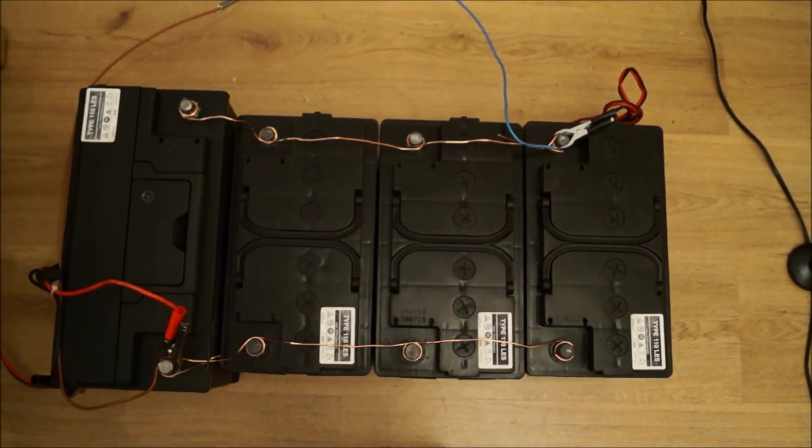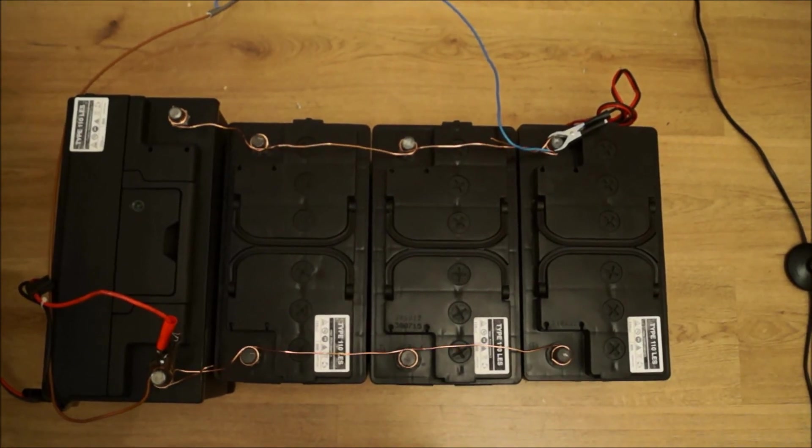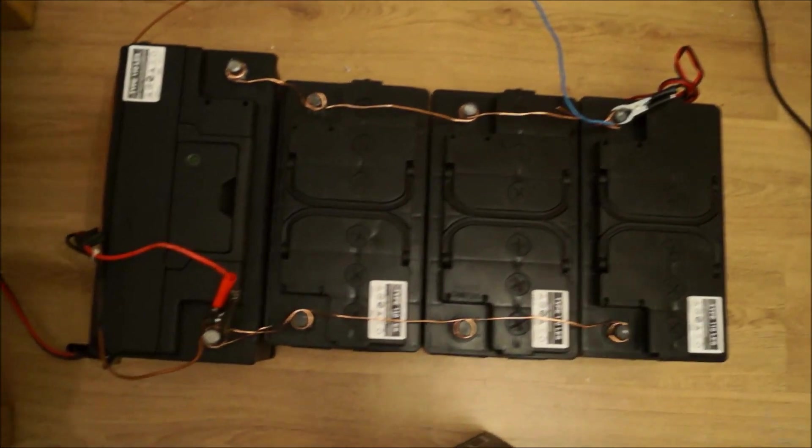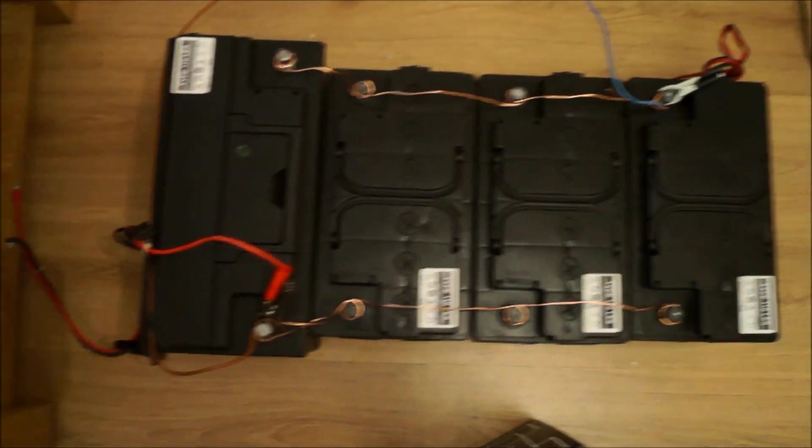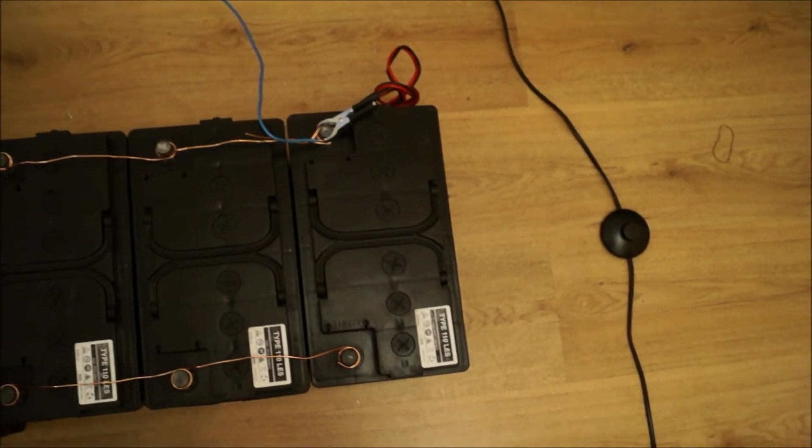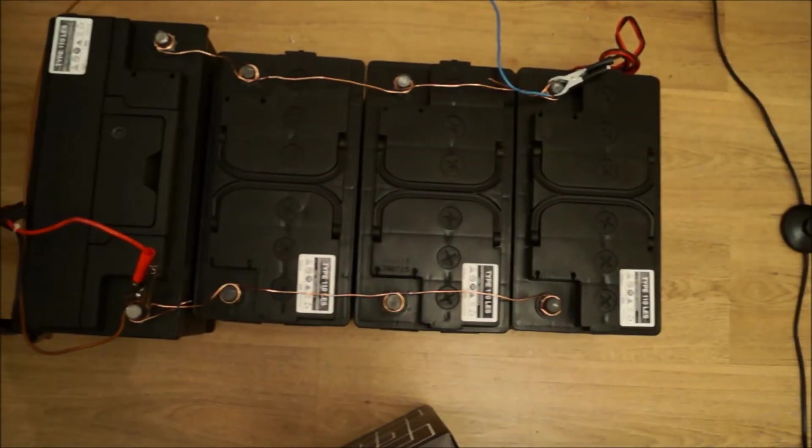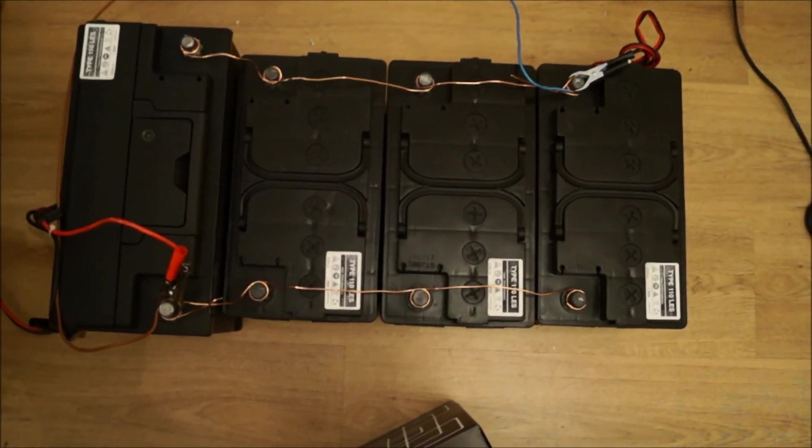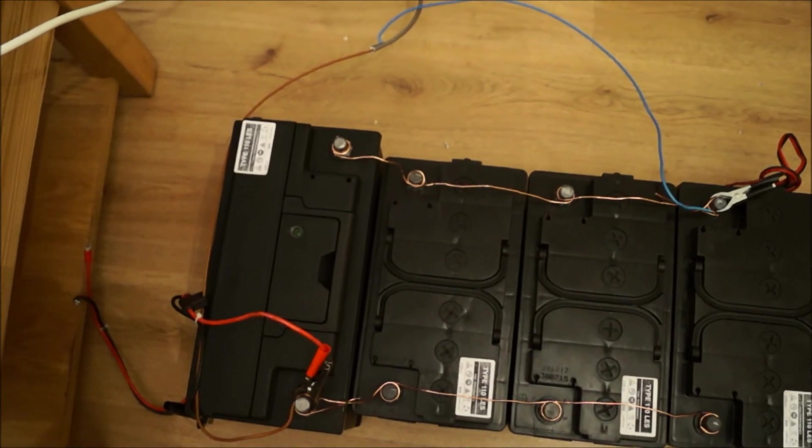One thing to keep in mind is when the batteries are in parallel, connect the positive side of the inverter to battery one right there and the negative side of the inverter to battery four over there. This just keeps everything equally shared through the parallel batteries, because if you kept the positive and negative through battery one, battery one will deplete first and then you won't get the full efficiency of the system.